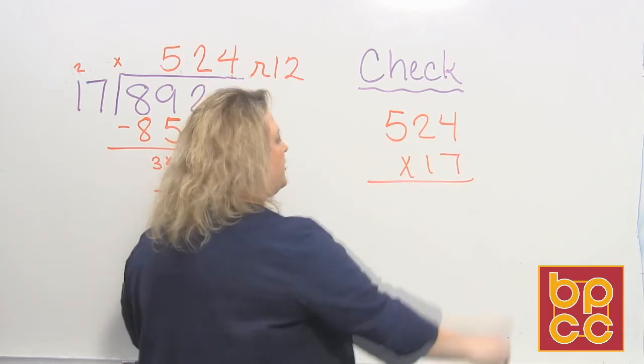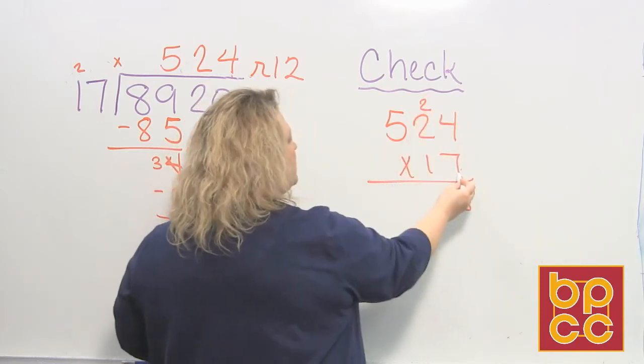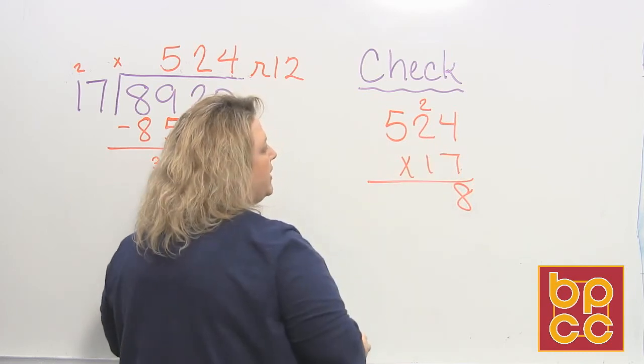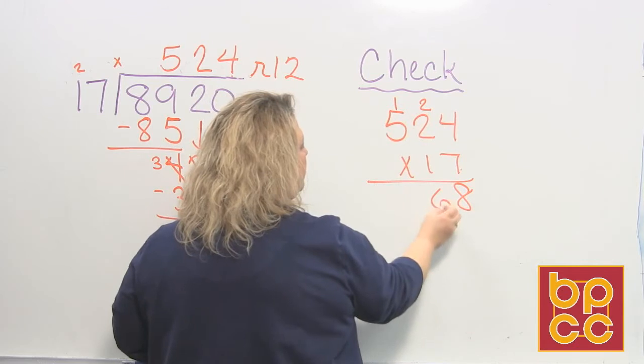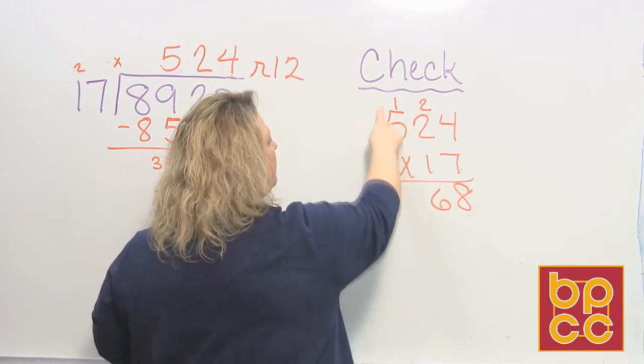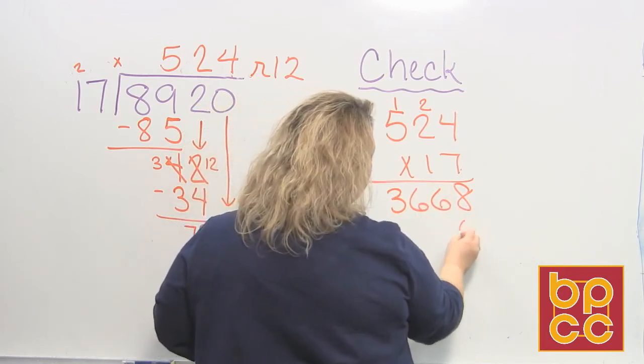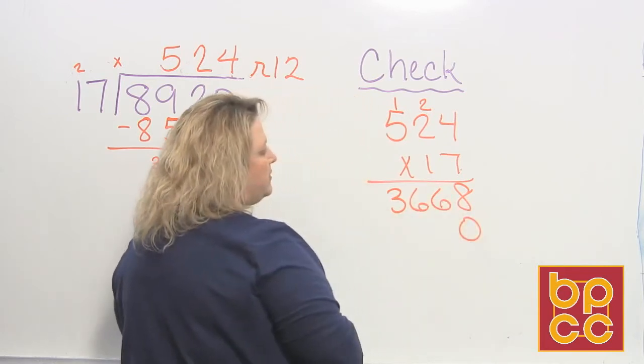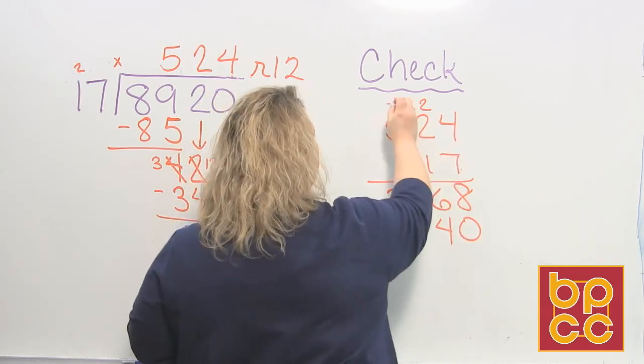And when we do the multiplication, 7 times 4 is 28. 7 times 2 is 14. 14 plus 2 makes 16. 7 times 5 is 35. 35 plus 1 makes 36. And remember to move over a space when we go to the tens place, and we do 1 times 4 is 4.